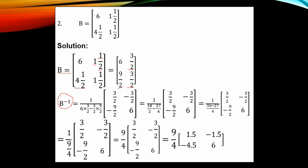The inverse is 1 over the determinant — that is 6 times 3 over 2 for the main diagonal, minus 3 over 2 times 9 over 2 for the second diagonal. You interchange the main diagonal: 6 and 3 over 2 become 3 over 2 and 6. The other diagonal — 3 over 2 and 9 over 2 — you multiply by minus 1, giving minus 3 over 2 and minus 9 over 2.